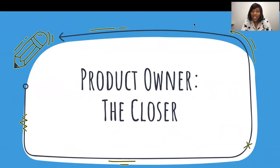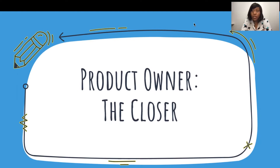Hi everyone, I want to thank you for joining me today as we explore the role of the product owner. This is a key member of the scrum team, and they manage the relationships and maintain the balance between the development team and business stakeholders. Part of the reason I call them the closer is that they ensure the technology takes the vision from the strategic business plan and backlog and turns it into actual functional technology, guiding the development team through the process.